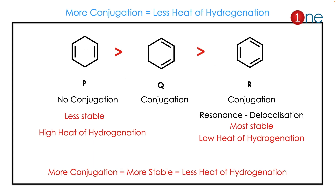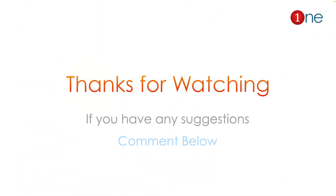The next fact is: more conjugation means less heat of hydrogenation, because conjugation provides stability. Looking at compounds P, Q, R: P has no conjugation, so it is less stable with high heat of hydrogenation. Q has some conjugation, making it relatively more stable with lower heat of hydrogenation. R is benzene — as everyone knows, resonance provides delocalization, making it more stable with less heat of hydrogenation.